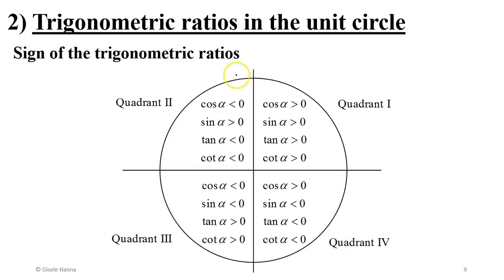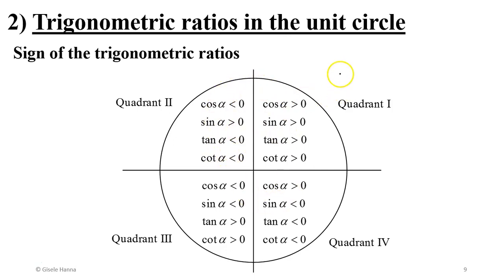Let's discuss the signs of the trigonometric ratios on the unit circle. With an orthonormal system, the circle is divided into four quadrants — a quadrant being a quarter of a circle. We move through them in counterclockwise order: quadrant 1, 2, 3, and 4.